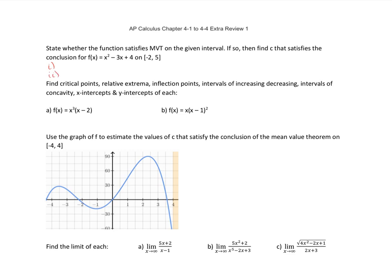In part 1, we want to see if this is continuous on the interval. Is it continuous? Yes, I can choose any value between negative 2 and 5 and I will get a result. Is it differentiable? f prime of x is 2x minus 3, and yes, it is differentiable on this interval. So now I can move on to part 3, which means I can find a point where the secant and the tangent are parallel.